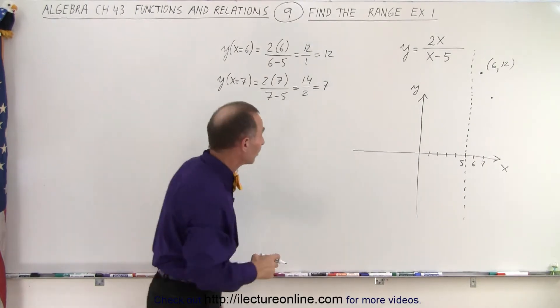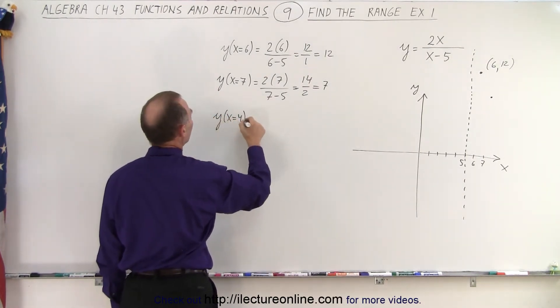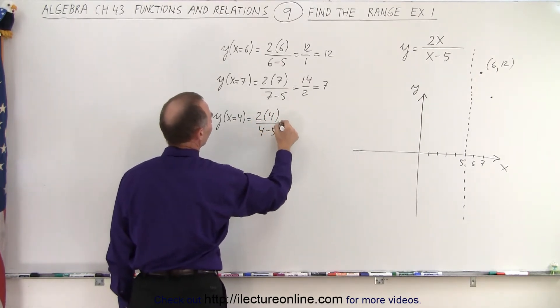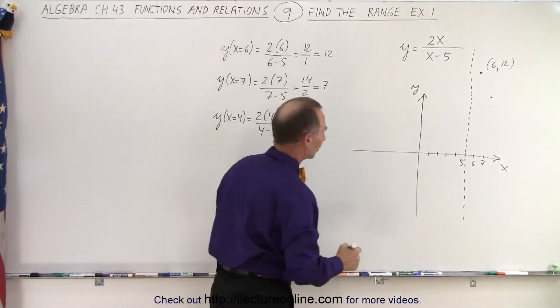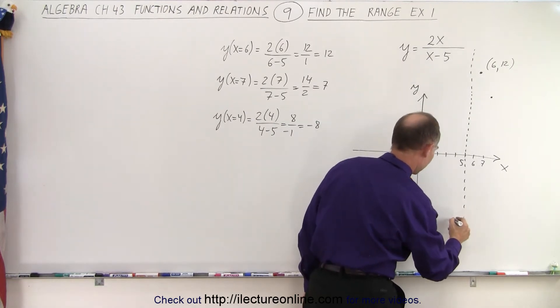On the other side, we'll do the same on the other side. We're going to evaluate y when x is equal to 4, which is 2 times 4 divided by 4 minus 5, which is 8 over negative 1, which is negative 8. So in other words, when x equals 4, y is equal to negative 8, which is about down here somewhere. So that's 4 comma negative 8.